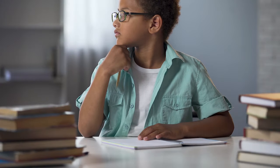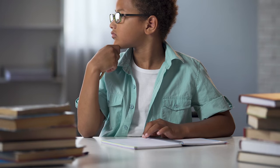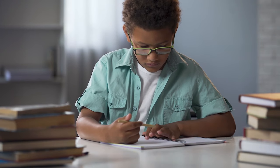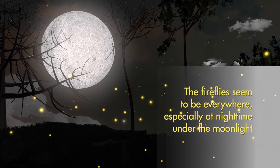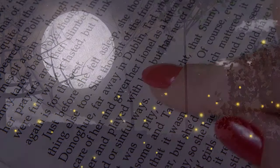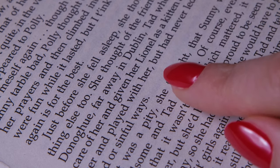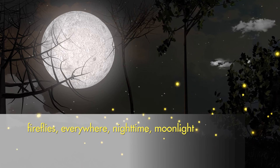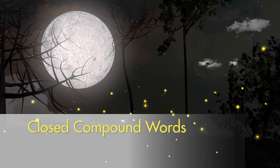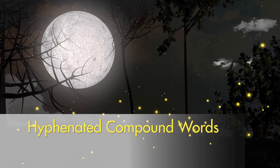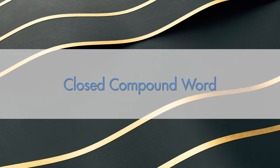Now let's look at three different sentences with open, closed, and hyphenated compounds. See if you can guess which type of compound words are in each sentence. 'The fireflies seem to be everywhere, especially at nighttime, under the moonlight.' Can you find the compound words in that sentence? Fireflies, everywhere, nighttime, moonlight. If there aren't spaces or hyphens between the words, then we know those are closed compound words.